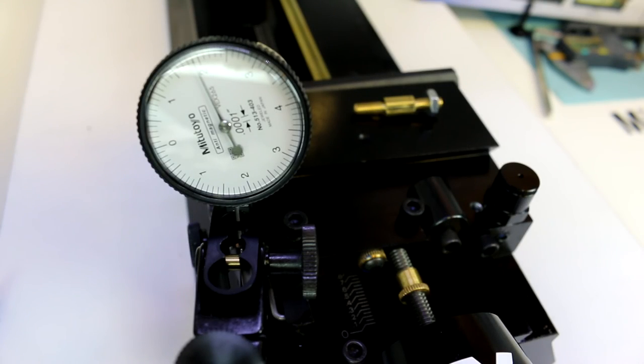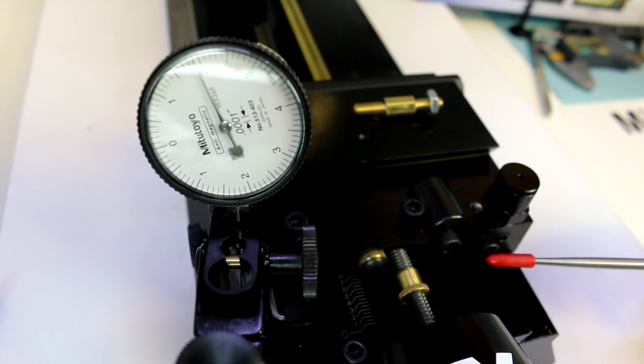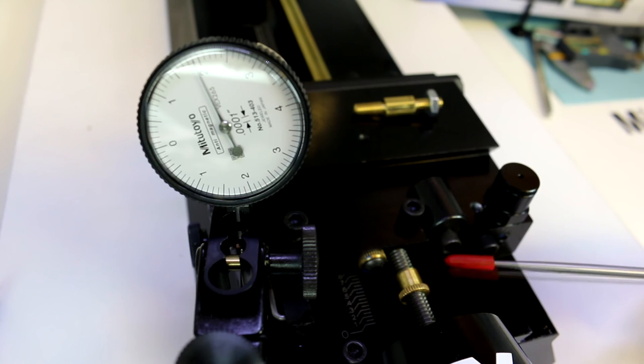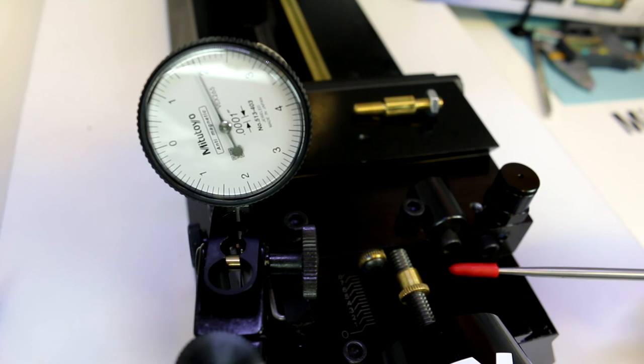So here we're going to start talking about backlash, how we measure it, what causes it, and how we can attempt to remove it. This topic applies equally to both the lathe and the mill. I'm showing the mill here and I still have it partially disassembled so that you might be able to better see some of these items. This also applies to both Sherline machines and any other brand of machines. The way you adjust the backlash may be different on other machines, but this type of behavior occurs regardless of the make or manufacturer of the machine.